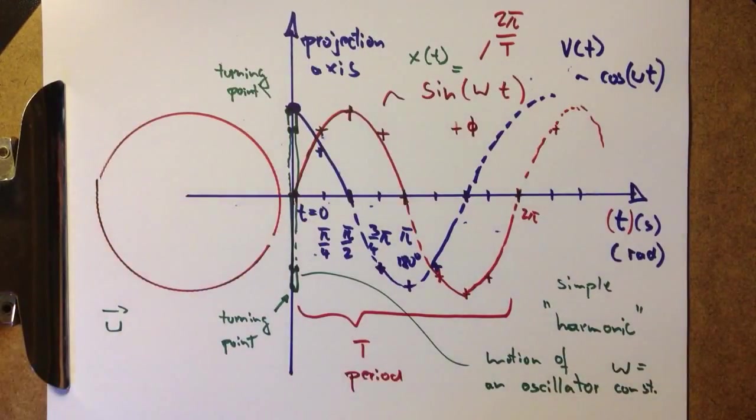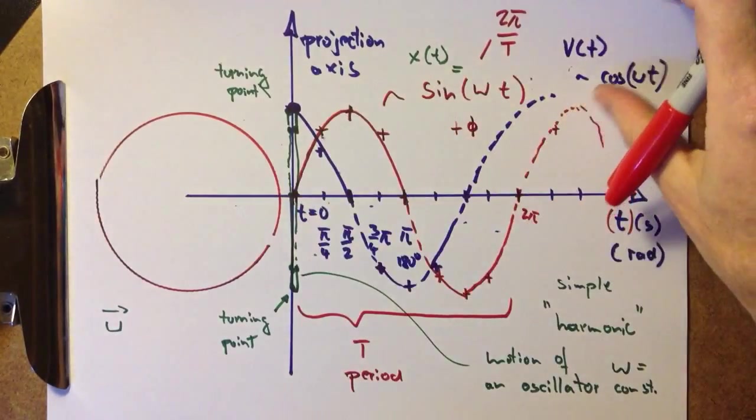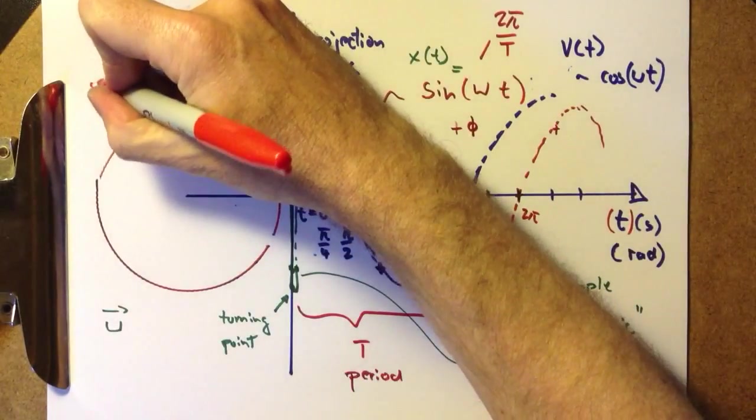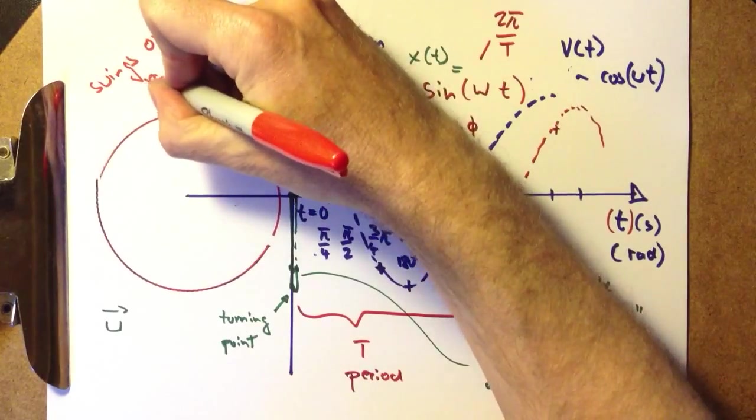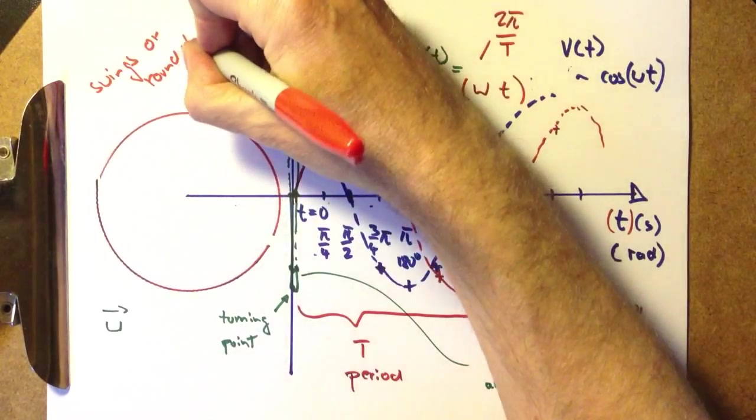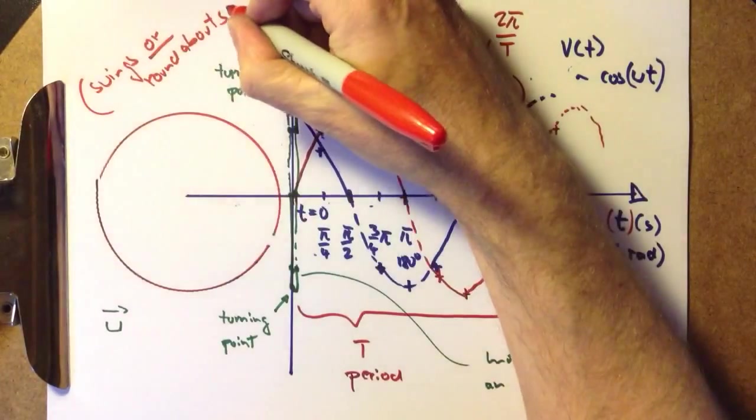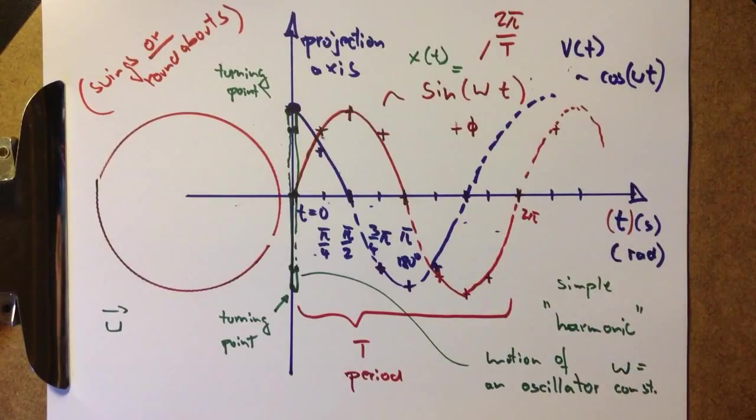Okay, you can see it's all swings and roundabouts. In fact, oscillations and rotations are swings or roundabouts. They are the same sort of thing.